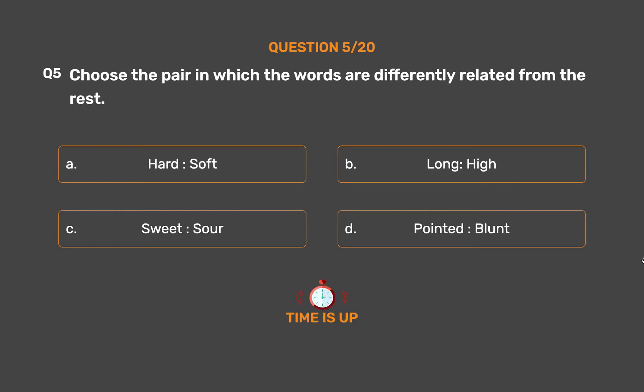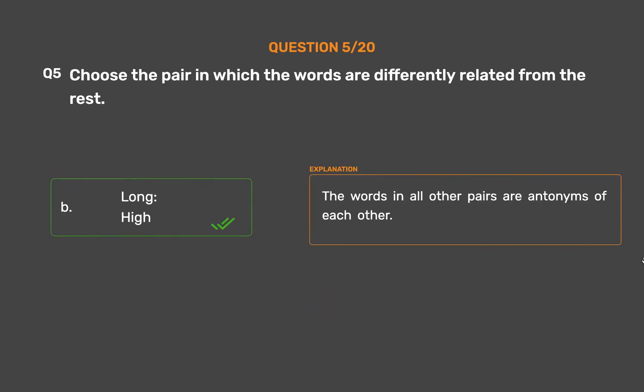The correct answer is Option B: Long, High. The words in all other pairs are antonyms of each other.